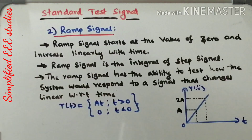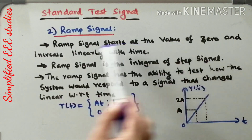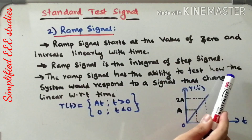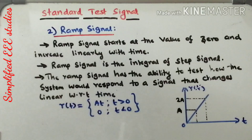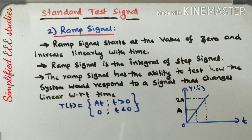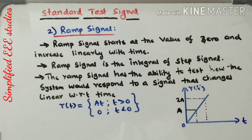Now let's discuss the ramp signal. The ramp signal starts at a value of 0 and increases linearly with respect to time, as you can observe from the figure — the shape of the curve is a straight line. The ramp signal is the integral of the step signal. The ramp signal has the ability to test how a system would respond to a signal that changes with respect to time. Mathematically, R(t) equals At where t is greater than 0, and R(t) equals 0 for t less than 0. The ramp signal represents a constant velocity input to the system.